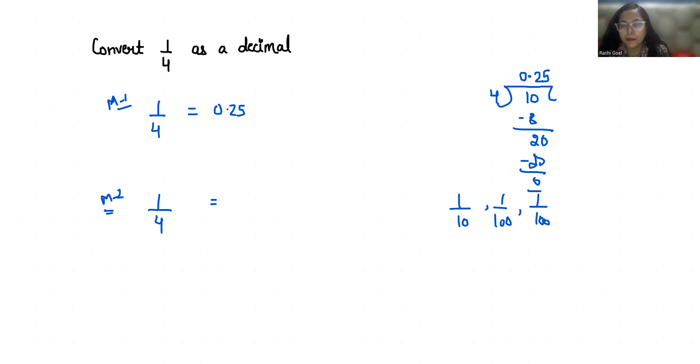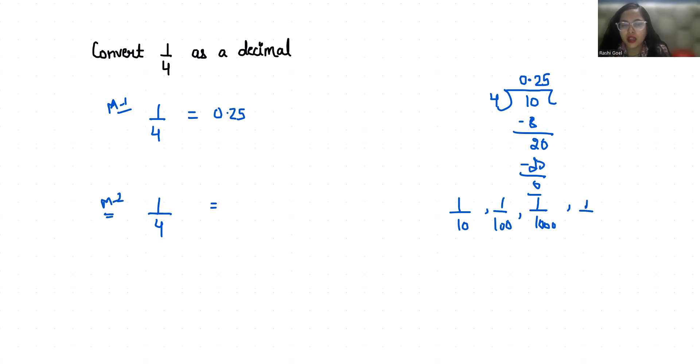you. So I can convert this 4 in terms of 100 because 10 cannot be divisible by 4. So we will convert in terms of 100. If I multiply by 25 in numerator as well as in denominator, it becomes 25 by 100. Now 25 by 100 in terms of decimal is 0.25.